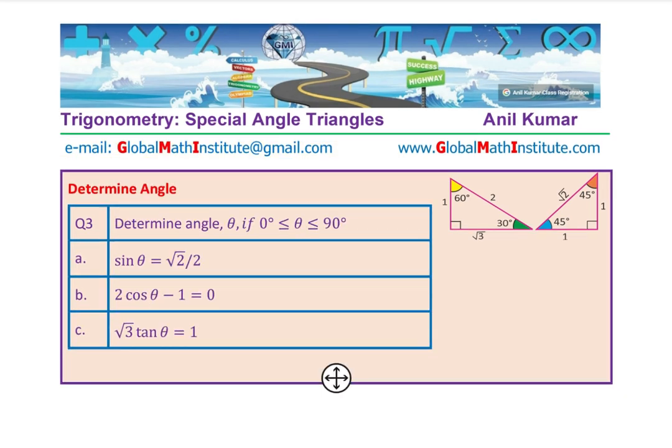Now let's look at a different aspect — this time we'll find the angles. Question number 3: determine angle theta if theta is between 0 and 90 degrees. First: sin theta equals square root 2 over 2. We know this angle has to be 45 degrees from the special triangle with sides 1, 1, square root 2. If you multiply each side by square root 2 over square root 2, you get square root 2 over 2, confirming theta equals 45 degrees.